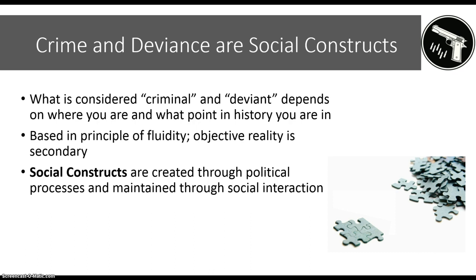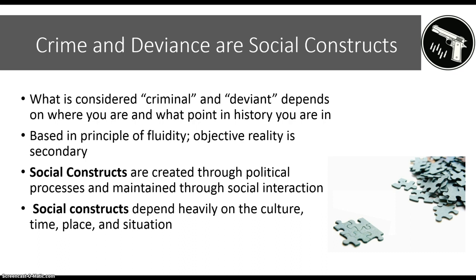What we come to think of as deviant and crime is part of a political and cultural process, and we reinforce these definitions through social interaction — by speaking with one another and reinforcing ideas of right from wrong. Social constructs are heavily influenced by the culture we live in, the times we live in, and the places and situations in which actions take place.